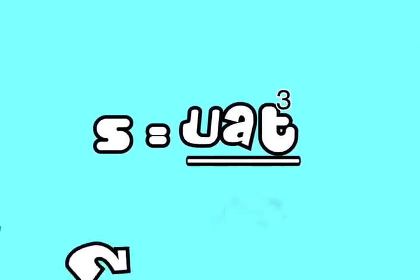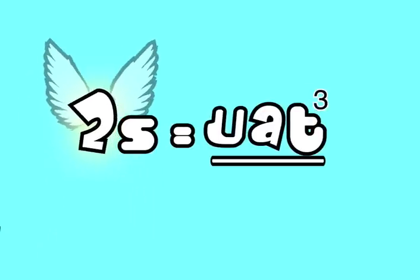Now we need to remove the divide by 2, so we multiply the whole equation by 2. We now have 2s equals uat cubed.